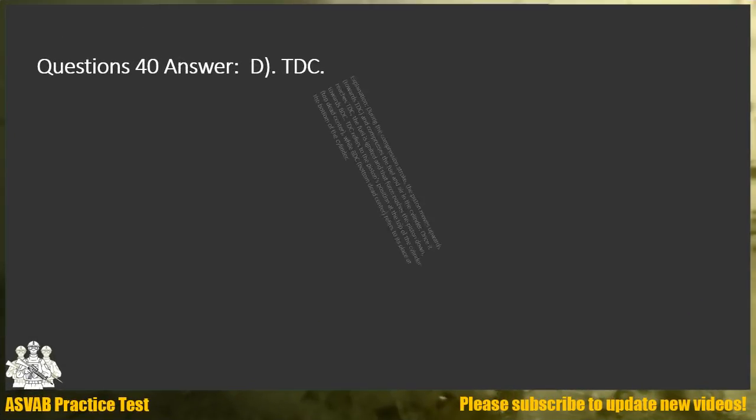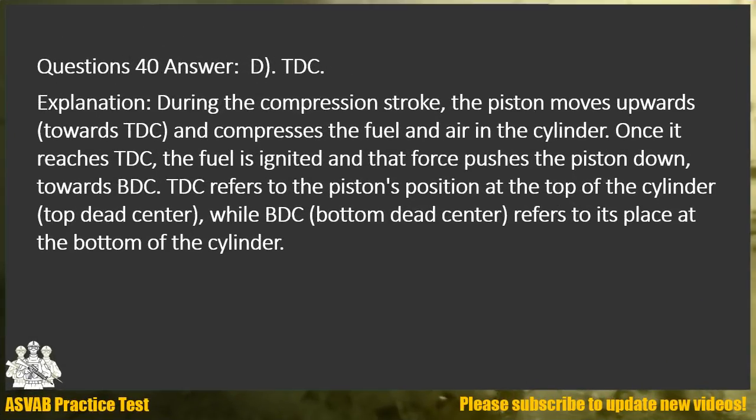Question 40. Answer D. TDC. Explanation: During the compression stroke, the piston moves upwards towards TDC and compresses the fuel and air in the cylinder. Once it reaches TDC, the fuel is ignited and that force pushes the piston down towards BDC. TDC refers to the piston's position at the top of the cylinder — top dead center — while BDC, bottom dead center, refers to its place at the bottom of the cylinder.